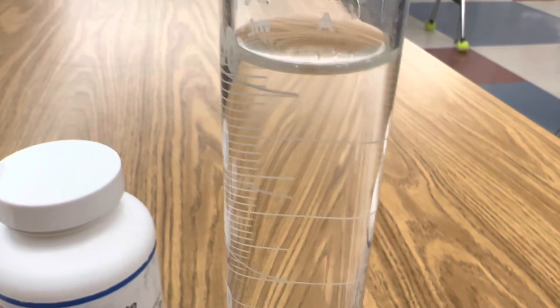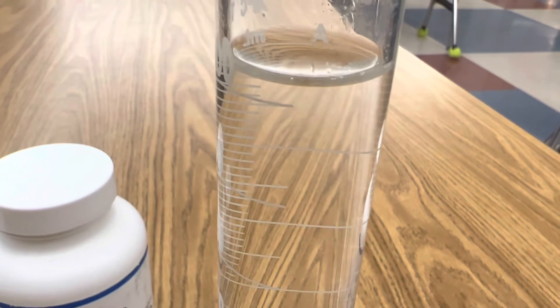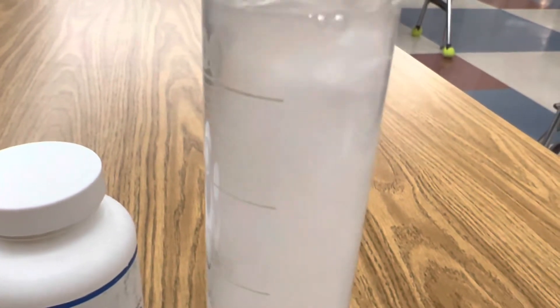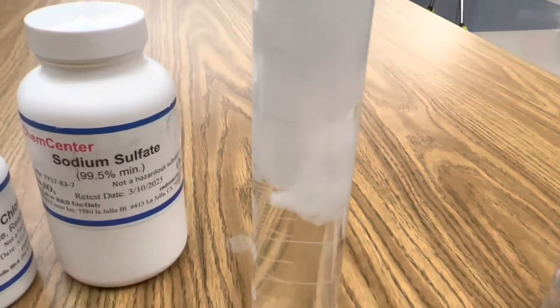So as I pour in my solution of sodium sulfate nothing will happen at first and then suddenly you'll see this very white cloudy precipitant form. There it is. Look at that.